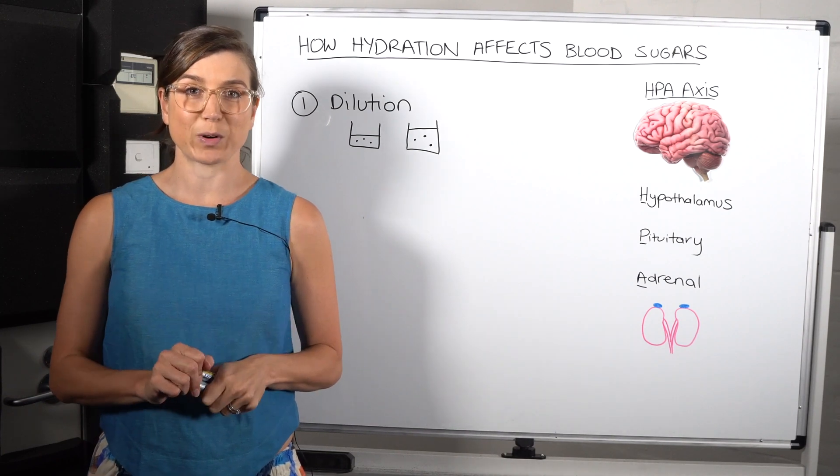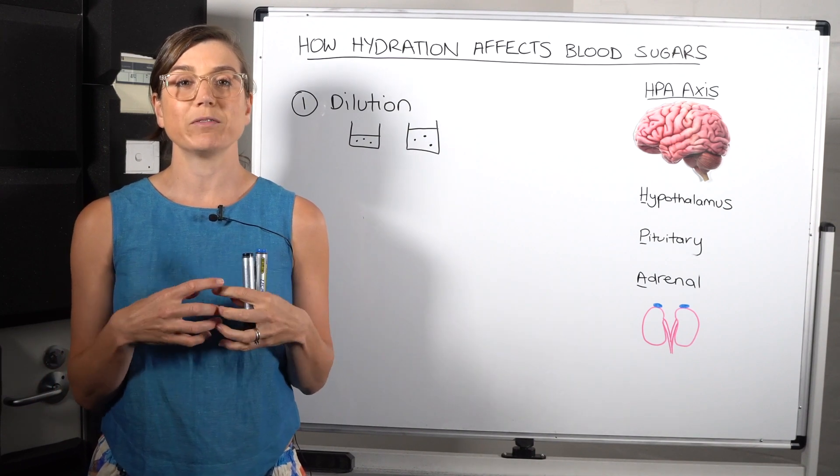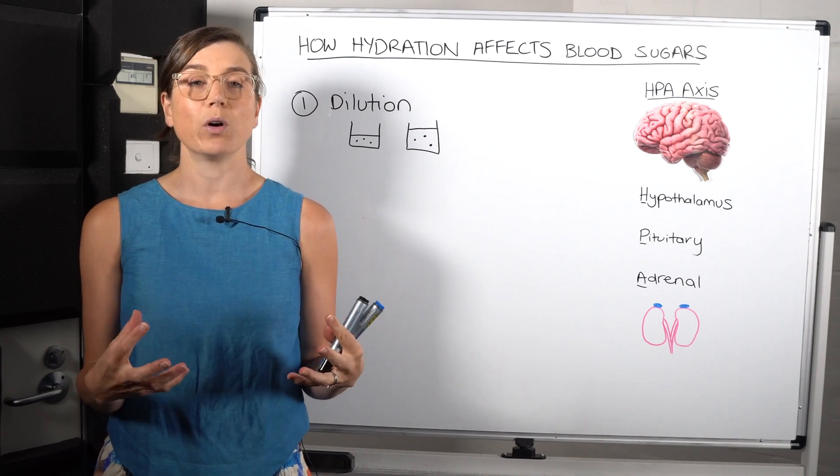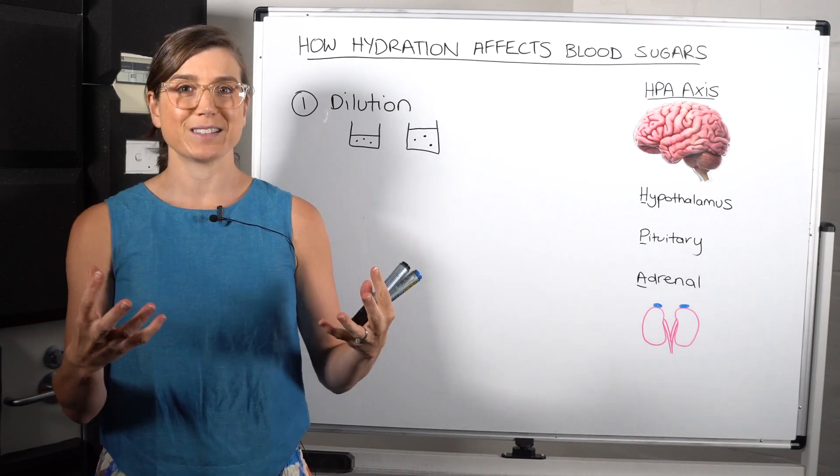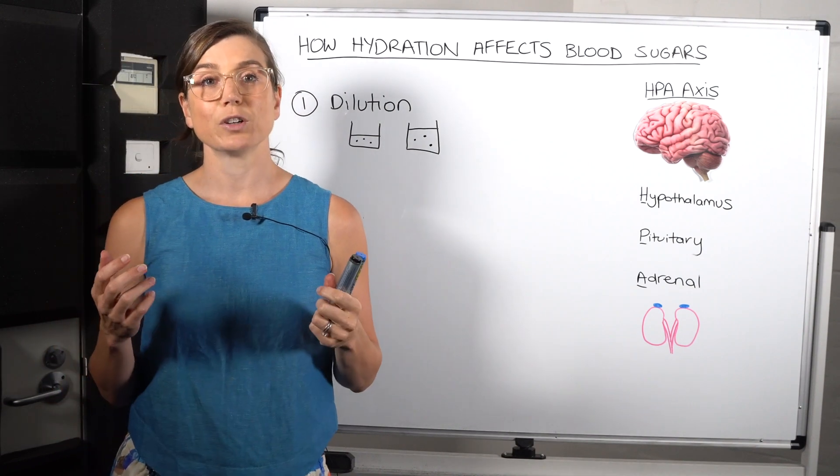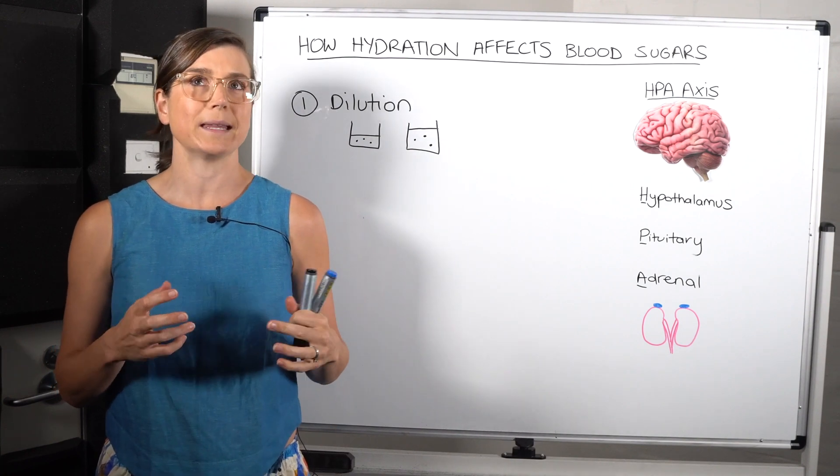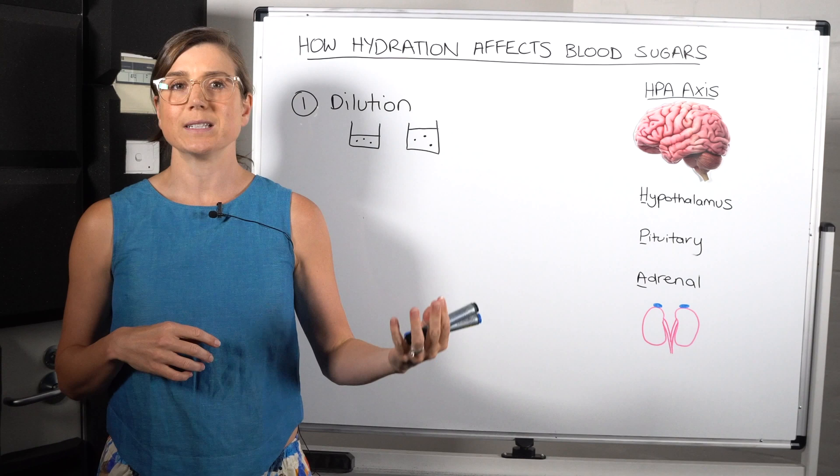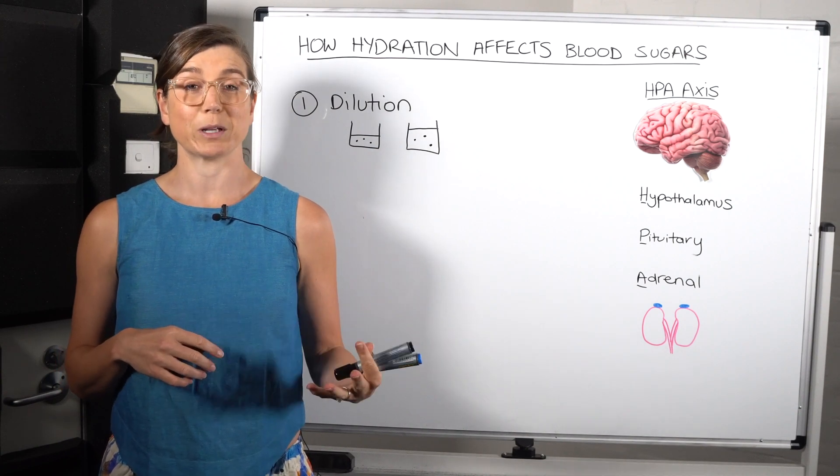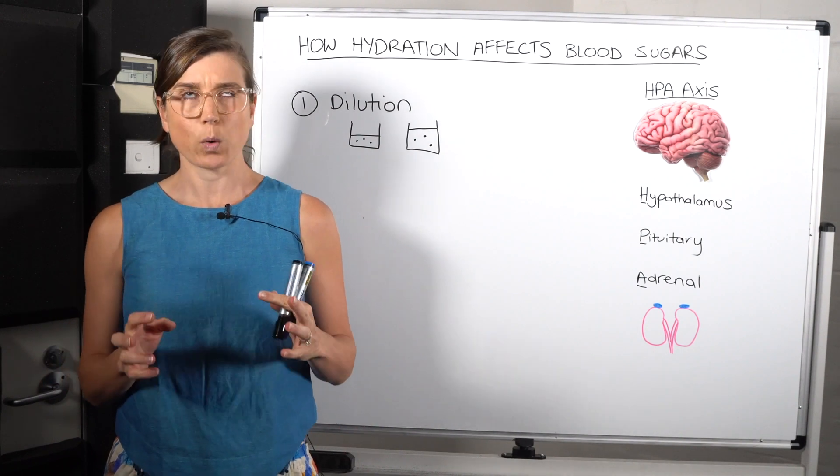So when you stay hydrated, you have more liquid on board and your blood volume then is greater. So if you have more blood on board that is liquid, that is the volume, then your blood glucose concentrations will be less. And this doesn't mean that drinking tons and tons and tons of water is going to dilute your blood so much that your blood sugar levels go into the normal range and everything's fine. It doesn't quite work like that.